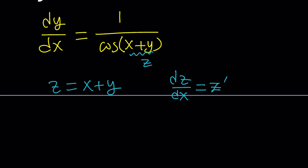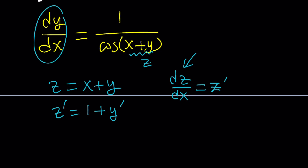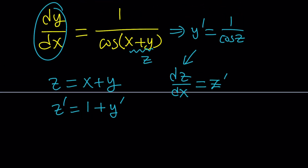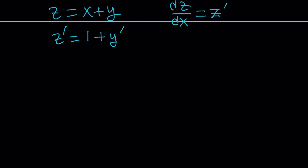We get z prime equals the derivative of x, which is 1 with respect to x, plus the derivative of y, which is y prime — also written as dy over dx. So from here, y prime equals 1 over cosine of z. Now I don't have z prime in my equation, I have y prime, so let's isolate y prime and write it as z prime minus 1.